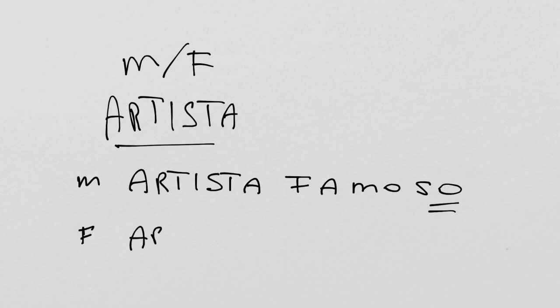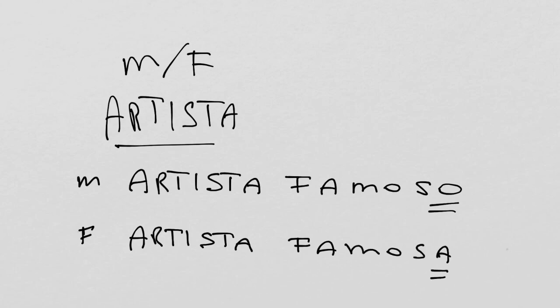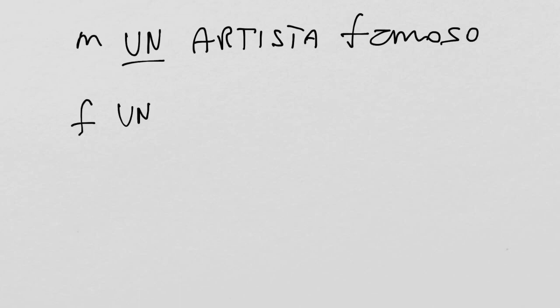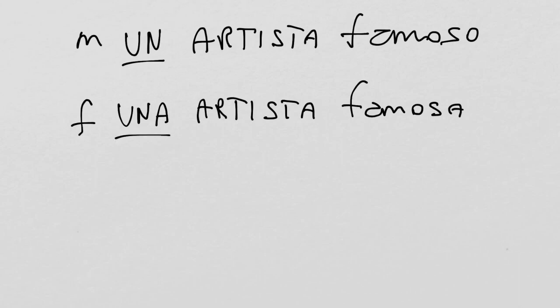They are both masculine and feminine. Let's begin with a word that we just saw: artista. Artista can refer both to a male or a female artist. The artista famoso would tell you that the artist is male, and the artista famosa is obviously female, because the adjectives specify the gender, but the noun itself doesn't. So we will have un artista famoso, with un, the masculine article, and una artista famosa, because artista in this case is feminine.